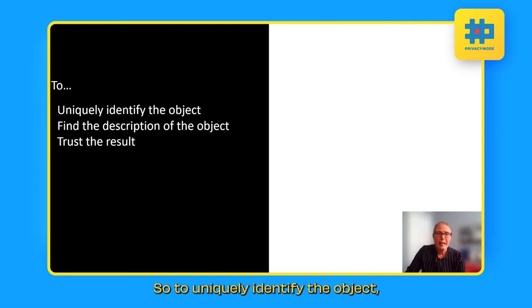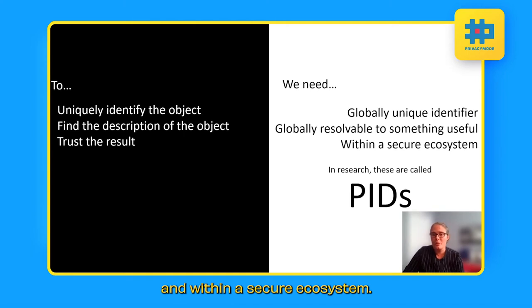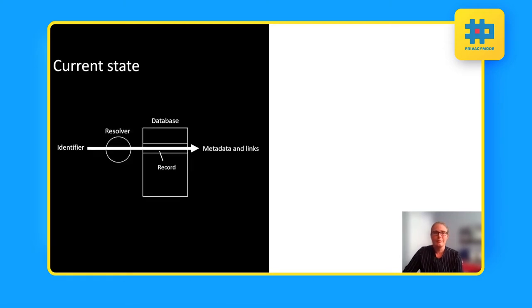So to uniquely identify the object, to find the description of the object and ultimately trust the results. In research, what we need is a globally unique identifier that's globally resolvable to something useful and within a secure ecosystem. And in research, we call these things PIDs, persistent identifiers.